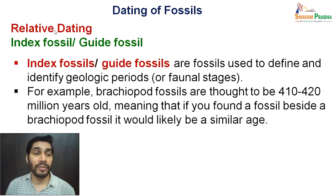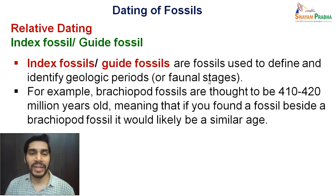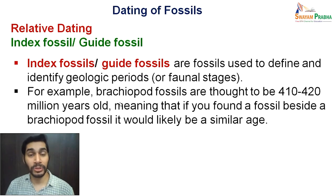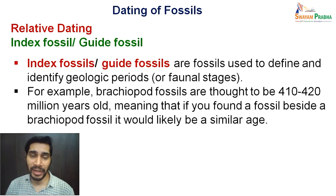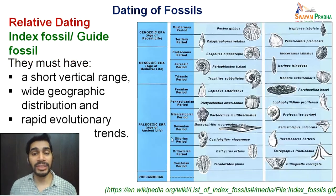Another method for dating fossils is the use of index or guide fossils. These are fossils used to define and identify geological periods or faunal stages. For example, assume you have found a fossil and nearby you have found brachiopod fossils. We already know brachiopod fossils are about 410 to 420 million years old, so you can predict the fossil found nearby is likely of a similar age. The brachiopod fossil acts as an index or guide to the age of the fossil you found.